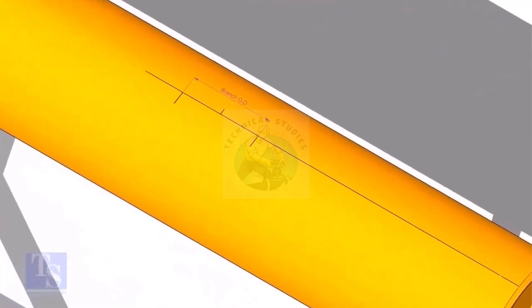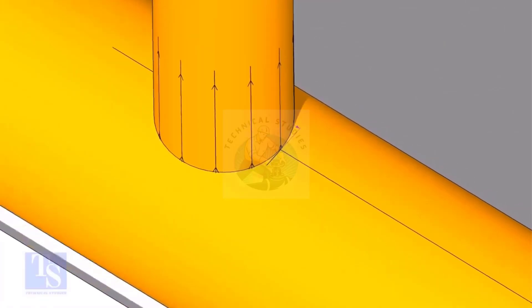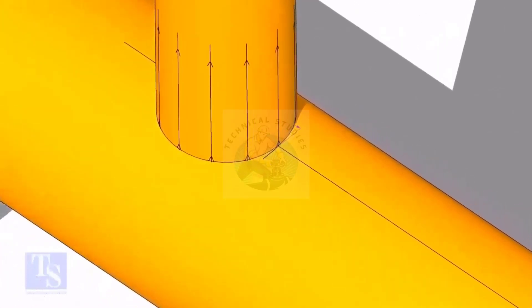Mark the branch OD on the center line of the header. Put the branch exactly on this marking, matching the branch center line.